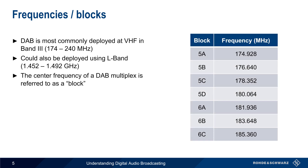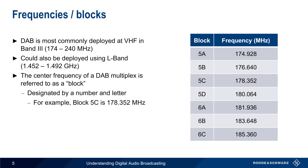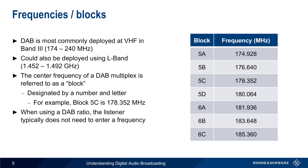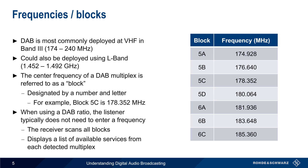The center frequency of a DAB multiplex is usually called a block, and is designated by a number and a letter. For example, block 5C refers to a signal with a center frequency of 178.352 MHz. When using a DAB radio, the listener generally does not enter a station frequency the same way that analog broadcast stations are tuned. Instead, the radio receiver scans all blocks and then displays a list of available services from the detected or received multiplexes.